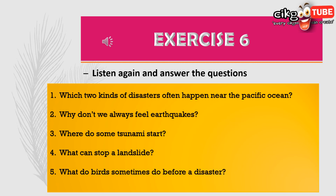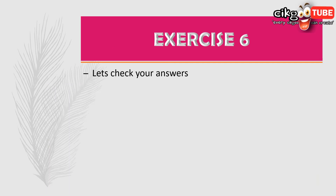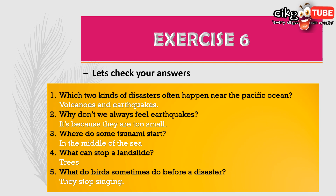If you didn't get your answers, rewind the video and listen again. Let's check your answers. Which two kinds of disaster often happen near the Pacific Ocean? Volcanoes and earthquakes. Why don't we always feel earthquakes? Because they are too small. Where do some tsunamis start? In the middle of the sea. What can stop a landslide? Trees. And what do birds sometimes do before a disaster? They stop singing.